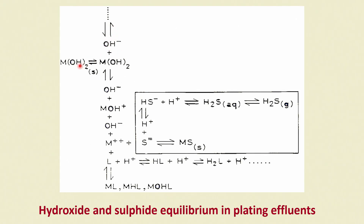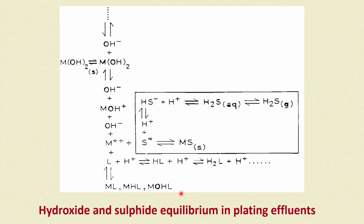When alkali is added, there is an equilibrium: M(OH)₂ solid ⇌ M(OH)₂ liquid, which ionizes to give OH⁻ and metal hydroxide species. If the hydroxide loses OH⁻, we get the divalent metal salt, and if there is a ligand, we get the ML complex. Acid can also combine with the ligand to give HL or H₂L, while the metal can react to give MHL or MOHL — where L is always a ligand and H and OH are additions from solution.